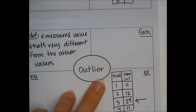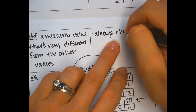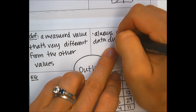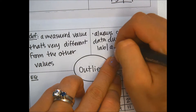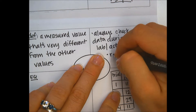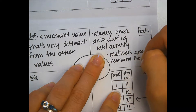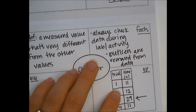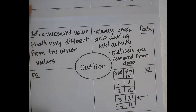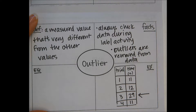Always check your data during your lab or activity. That way, if you notice a data point that would be an outlier, you can get rid of it and still have the correct number of trials instead of having to remove it later. Outliers are always removed from data. If you have an outlier, remove it before you do any calculations so that your reported numbers are as accurate and precise as possible. Outliers don't have an equation. Pause the video if you need to, and when you're ready we're going to open it up.